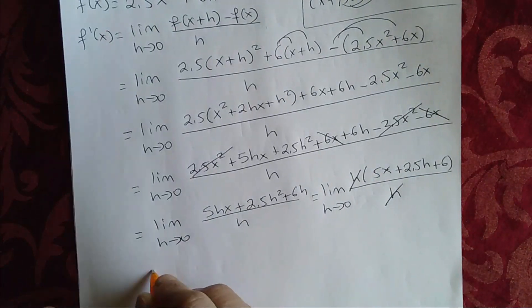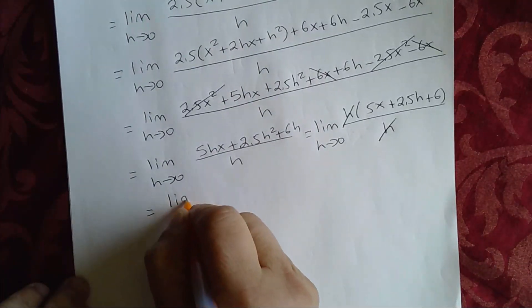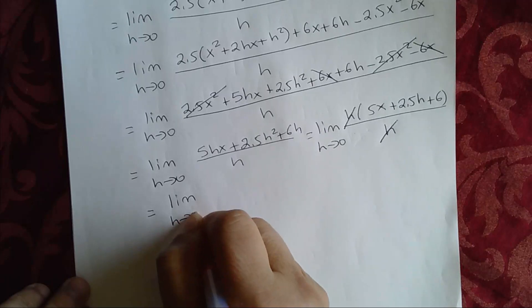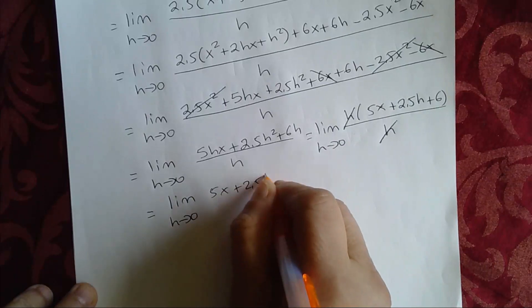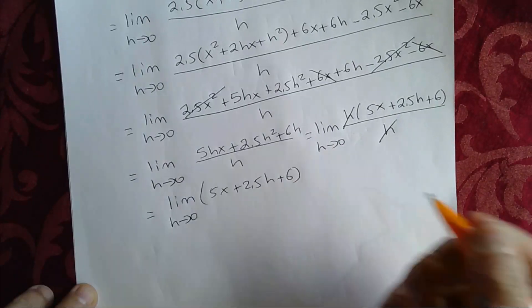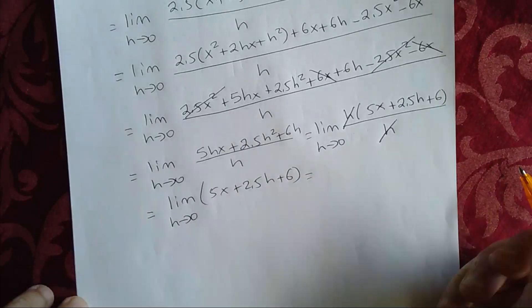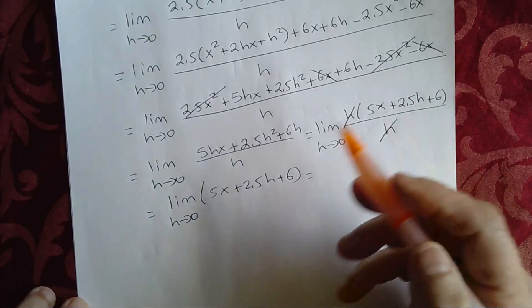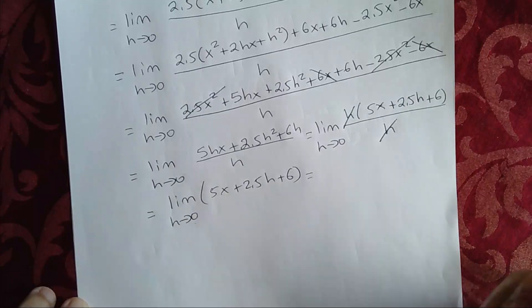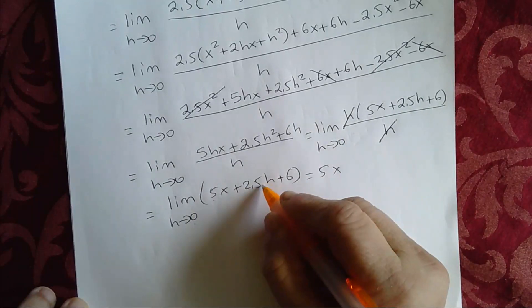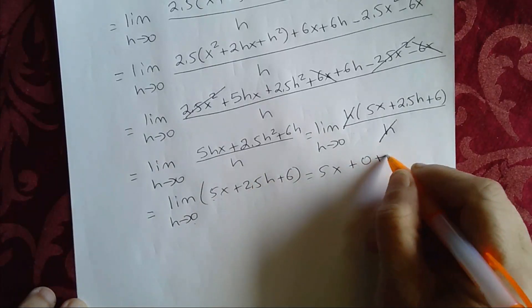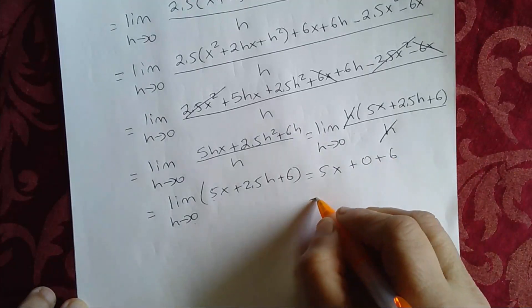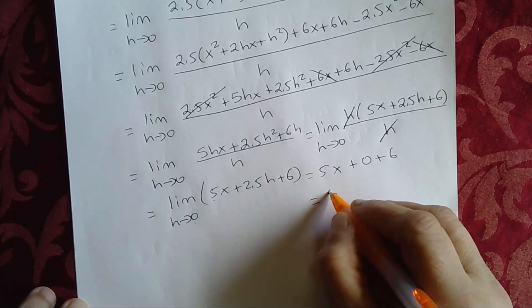You'll be left with the limit as h approaches 0 of 5x plus 2.5h plus 6. We can use direct substitution here. When we plug in h equals 0, you're left with 5x plus — 2.5 times 0 is 0 — plus 6. So the result, the answer, is 5x plus 6.